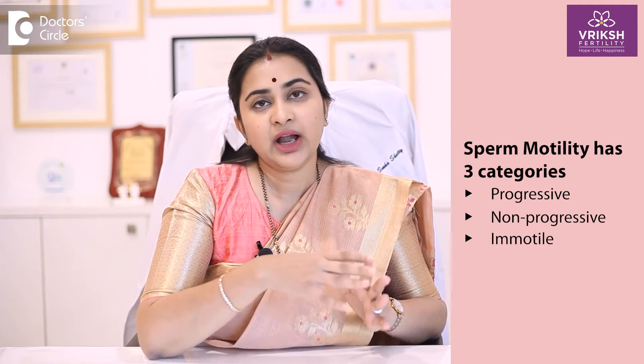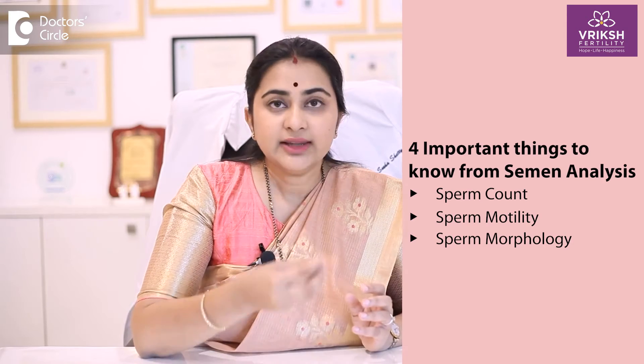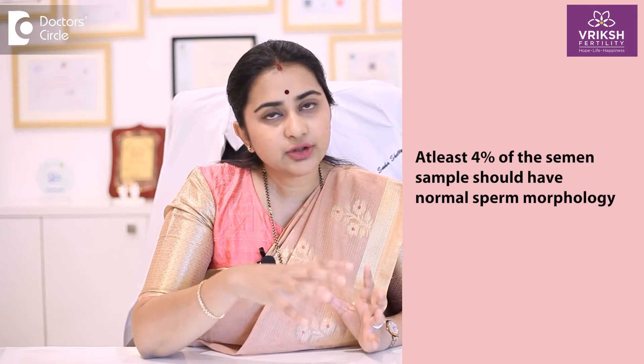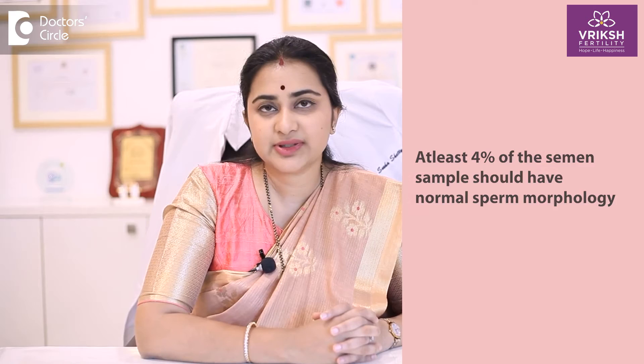In motility itself, we have three categories: progressive, non-progressive, and immotile sperms. Apart from this, the third point is morphology — how many sperms have normal morphology. The sperm has a head, a middle piece which is the neck, and a tail. These three parts should be in good normal form, and at least four percent of the entire sample should have normal morphological sperms.